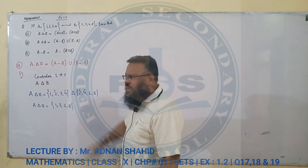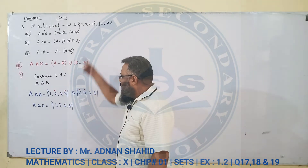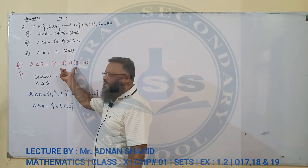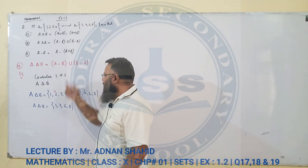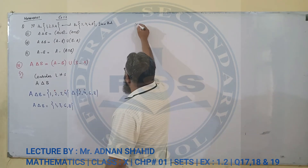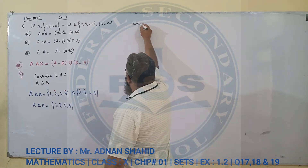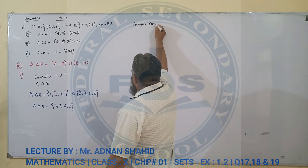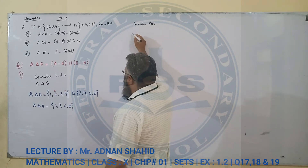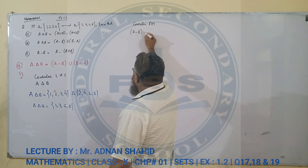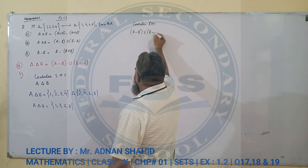Left hand side solve हो गई। अब right hand side की तरफ जाते हैं — consider RHS. RHS है A minus B union B minus A. A minus B union B minus A।